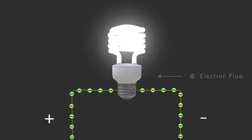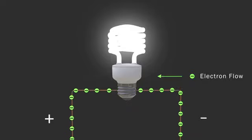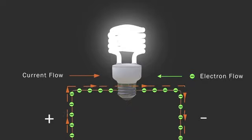Current is flow of electrons but current and electron flow in opposite directions. Current flows from positive to negative and electrons flow from negative to positive.